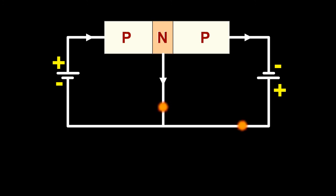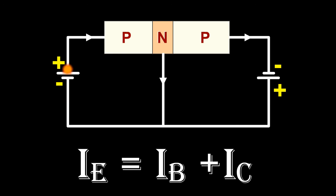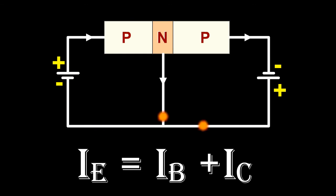Applying Kirchhoff's current law to the circuit, the emitter current is the sum of collector current and base current, that is IE is equal to IB plus IC. This equation is the fundamental relation between the currents in a transistor circuit. This equation is true regardless of transistor type or transistor configuration. The action of an NPN transistor is similar to that of a PNP transistor.